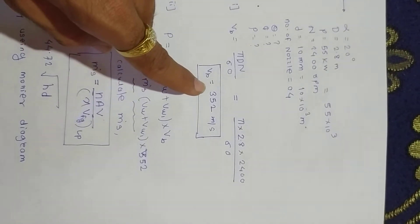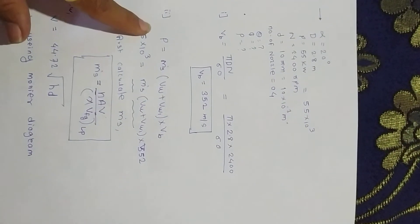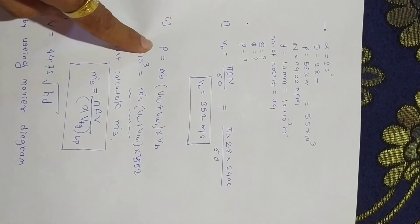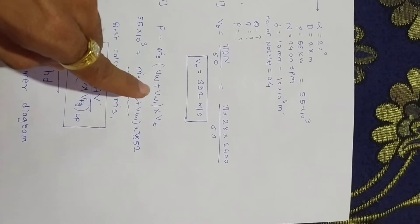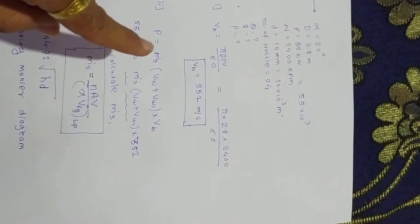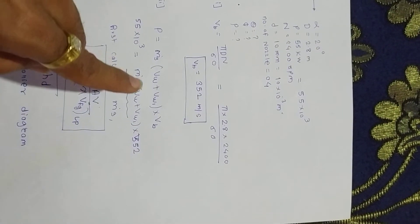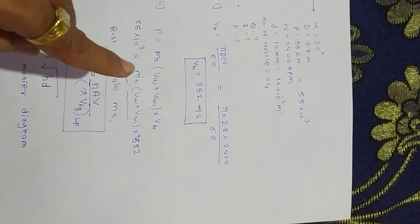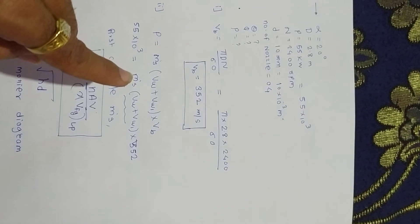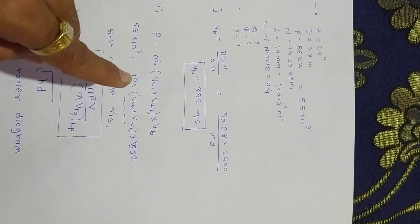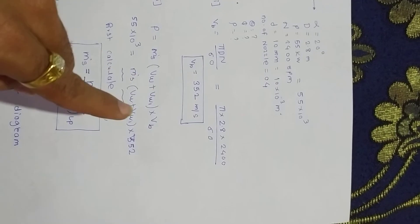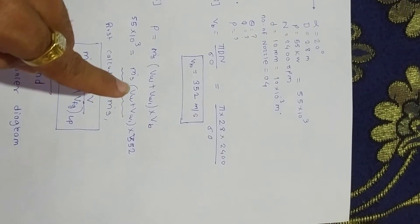For calculating VB they give D and N, so VB is around 352 meters per second. Now we know the formula of power: P equals mass of steam times total whirl times VB. In previous numericals we used this formula to calculate whirl velocity, but here mass of steam is not given.